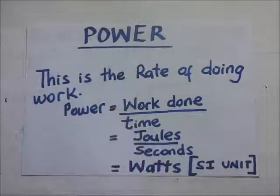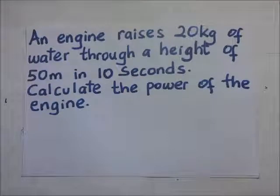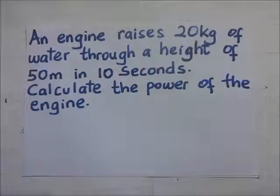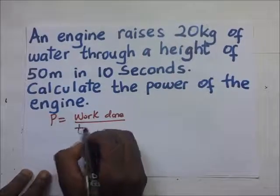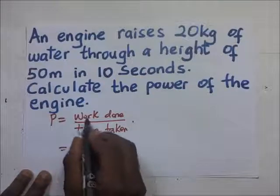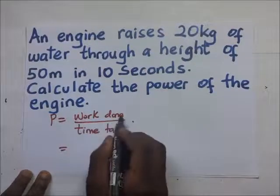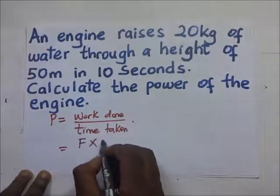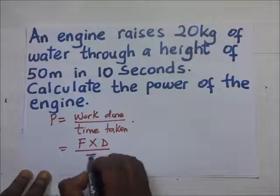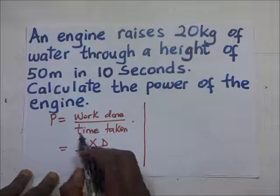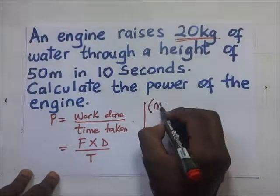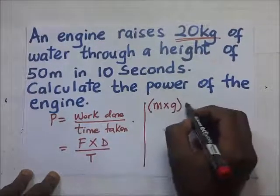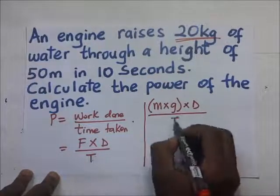The watt is the SI unit for power. An engine raises 20 kilograms of water through a height of 50 meters in 10 seconds — calculate the power of the engine. Power equals work done over time. The formula for work is force times distance over time taken. The force has not been given, but we have the mass.